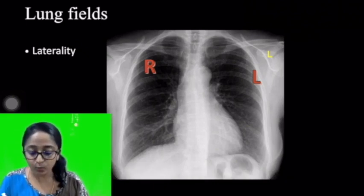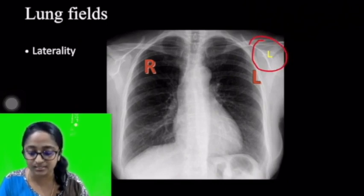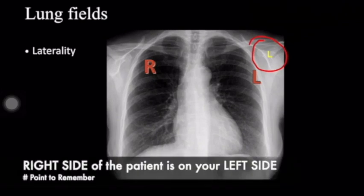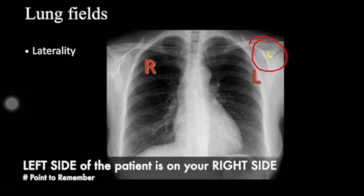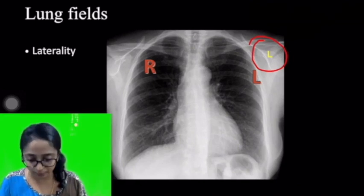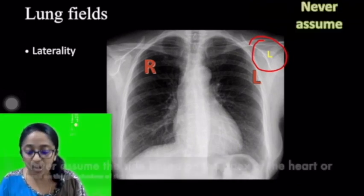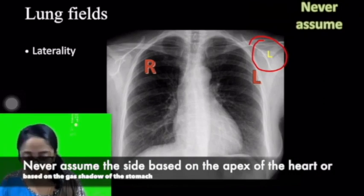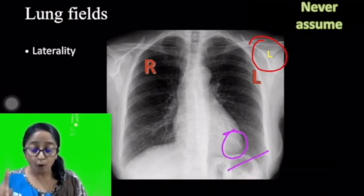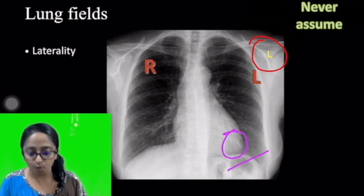Most often, the side will be represented in one of the corners — as in this figure, it is seen in the left upper corner. Always remember, the right side of the patient is on your left side, whereas the left side of the patient will be on the right side. Confirm the laterality based on what is given in the radiograph, and always remember, never assume the side based on the apex of the heart or by looking at the gas shadow of the stomach — you may often end up getting it wrong.